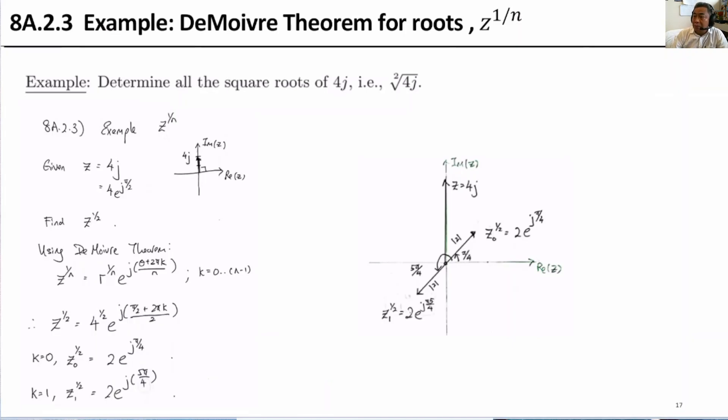Let us have an example using DeMoivre's Theorem for roots z to the power of 1 over n. This is the given z, 4j. So we draw z here. This is the real axis, and this is the imaginary axis, and this is the vector representing z equals to 4j.